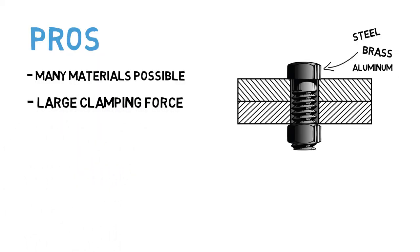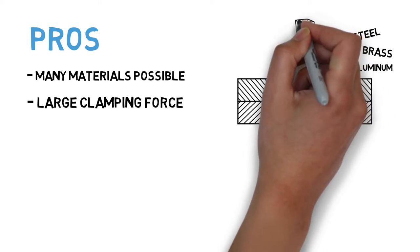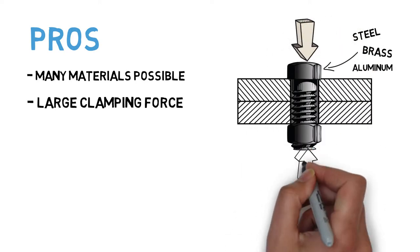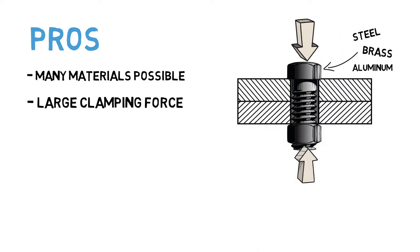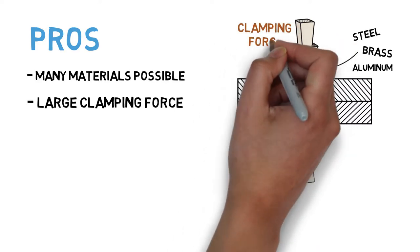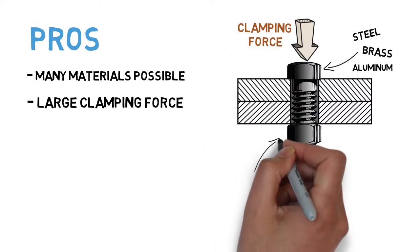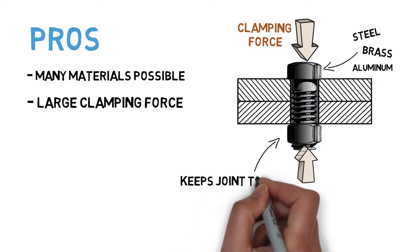Another pro is that threaded fasteners are able to generate large clamping forces. This is particularly important for tension-type joints, and for joints that serve a sealing purpose, where leakage of fluid, such as fuel, could occur if the parts are not sufficiently clamped together.